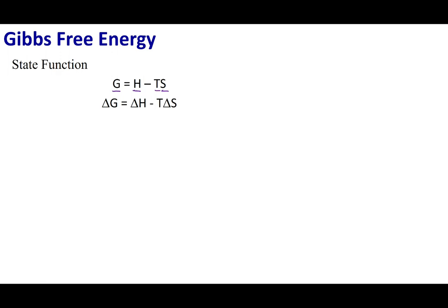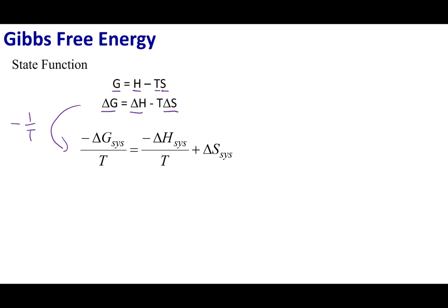So if this is my equation, the change in Gibbs free energy is going to equal the change in enthalpy minus temperature times the change in entropy. What I'm going to do is divide this equation by negative 1 over T. We talked about something in our last lecture: negative delta H of our system over temperature is the delta S of our surroundings.